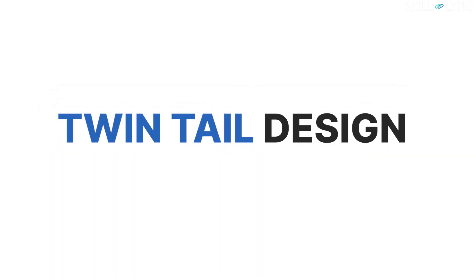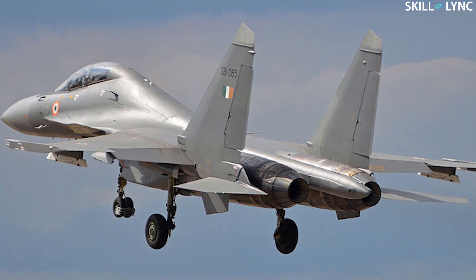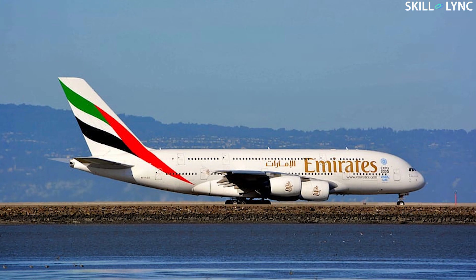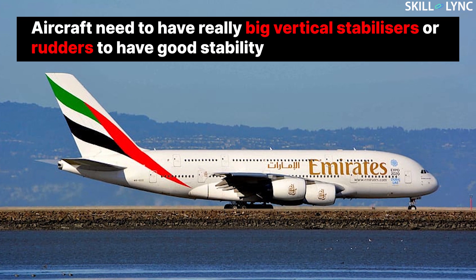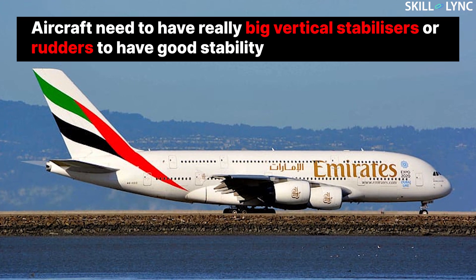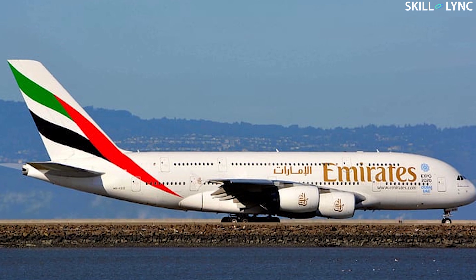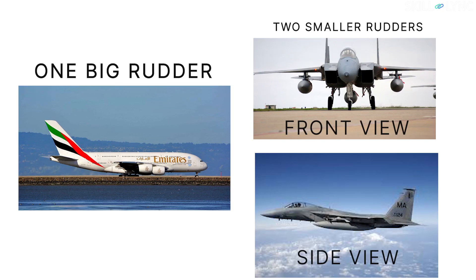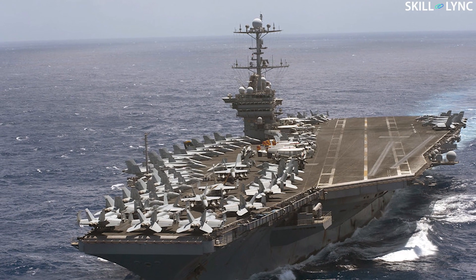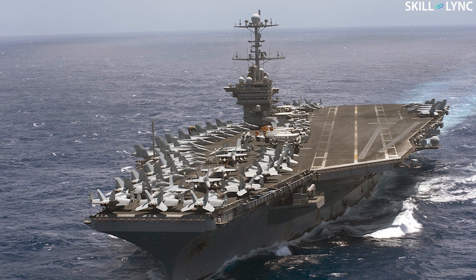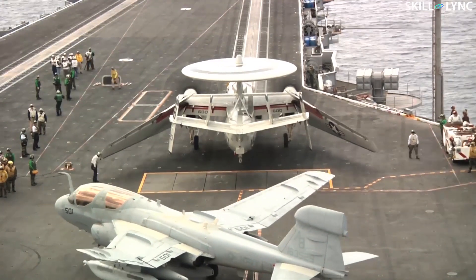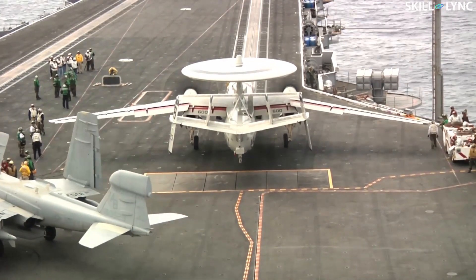The next type of empennage design is the twin-tail design. The twin-tail design is mostly used in fighter planes. The most common reason is the radar cross-section — aircraft need really big vertical stabilizers or rudders to have good stability, but big rudders tend to have a big radar cross-section. This can be eliminated by splitting one big rudder into two smaller separate ones, which reduces the size of the rudder and the radar cross-section, and also reduces the overall height of the aircraft. This is vital for carrier-bound planes due to the very limited space available in aircraft carriers. Many carrier-bound aircraft also have folding wings to accommodate space in the hangars.